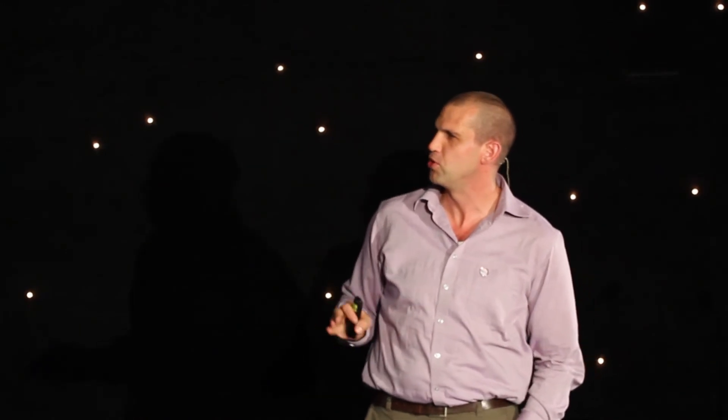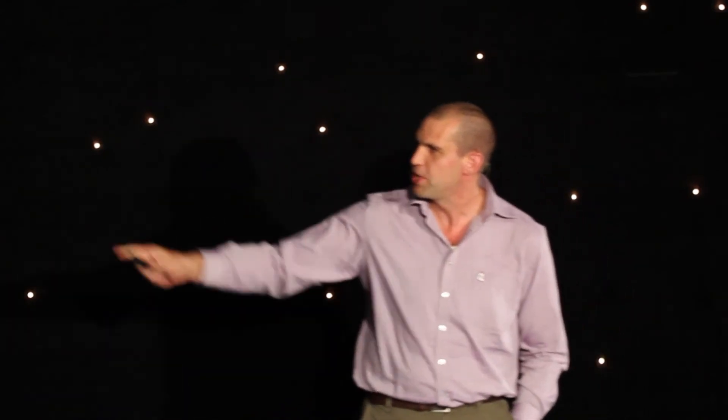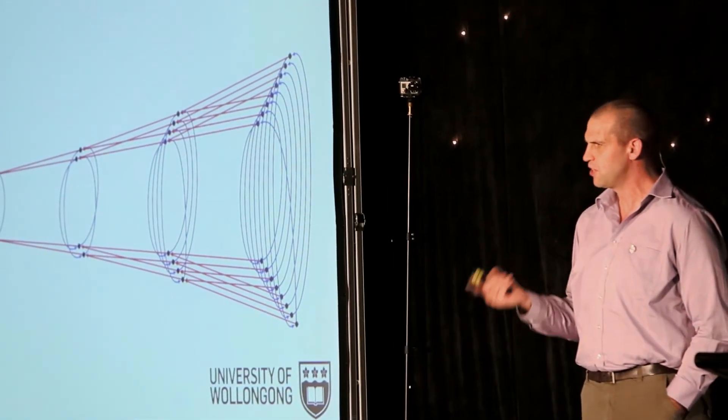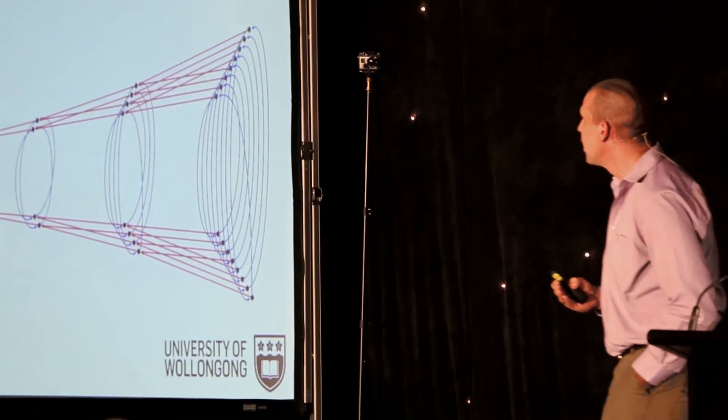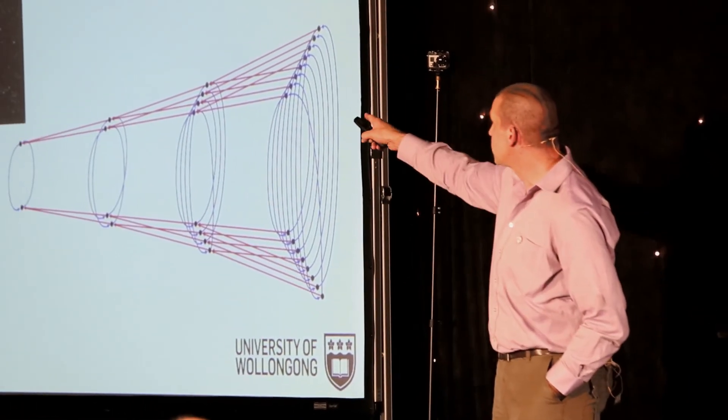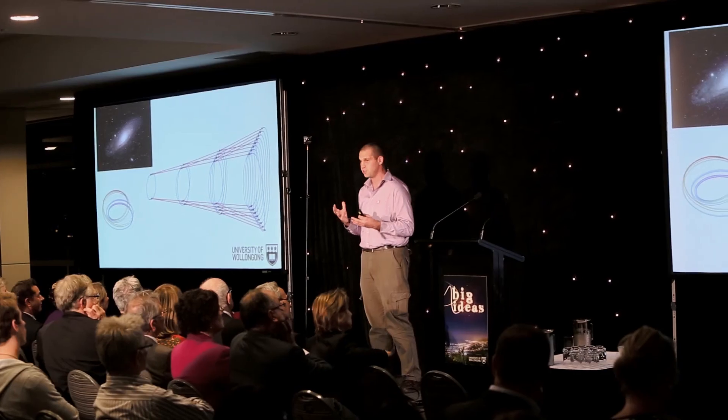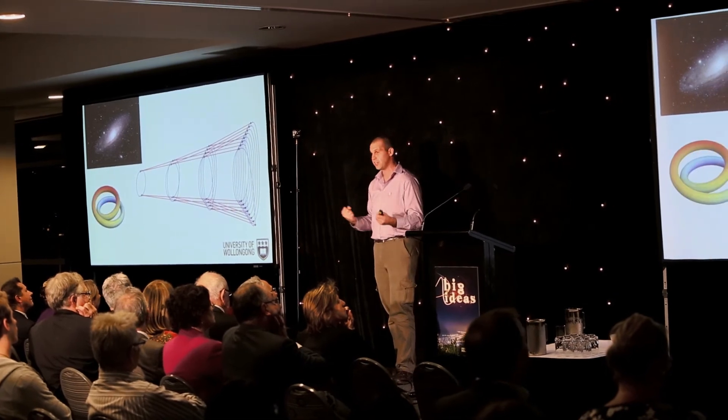Around 2001, at a conference, one of the big names in operator algebra — George Elliott — put up a picture of a galaxy and opened his talk by saying, 'I want you to tell me what you think I think this looks like.' His answer was that it looked like the irrational rotation algebra. For me this was an eye-opener, because I had no idea why he'd think that — it was his intuition. This meant we didn't have good visual pictures for operator algebras; we didn't have an intuitive handle on what they were doing.